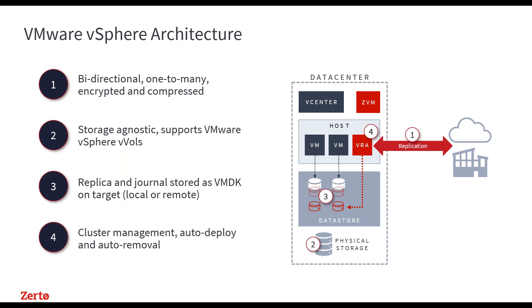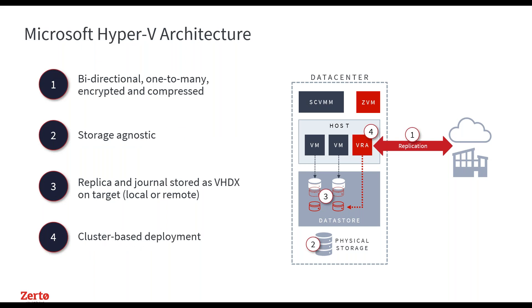If we look at the Zerto architecture for on-premises disaster recovery — the hypervisor-to-hypervisor DR — it's very simple. We have bidirectional, one-to-many, encrypted, and compressed replication. We support VMware technologies such as vVols, Storage vMotion, and regular vMotion. We don't have to change the way you're operating your data centers today to include Zerto. Replica disks are stored as VMDK files — the native format of a VMware infrastructure. For Hyper-V it's essentially the same, storing things as VHDX files, and we are completely storage-agnostic underneath for both platforms.